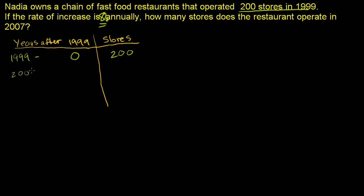Then in 2000, which is one year after 1999, how many is she going to be operating? Well, she grows at the rate of 8% annually. So she'll be operating all the stores that she had before, plus 8% of the stores she had before. So 1.08 times the number of stores she had before. And you're going to see the common ratio here is 1.08. If you're growing by 8%, that's equivalent to multiplying by 1.08.